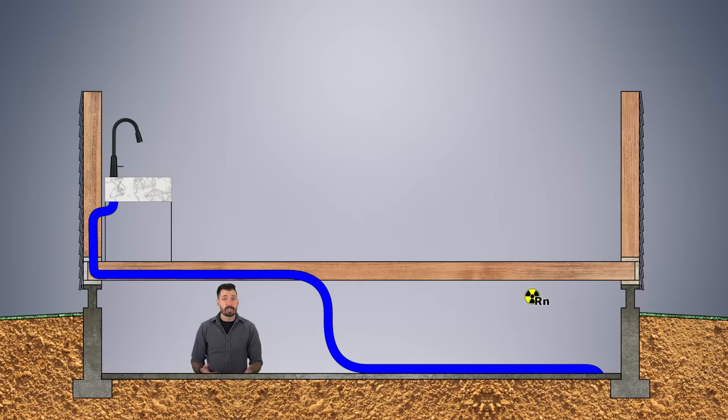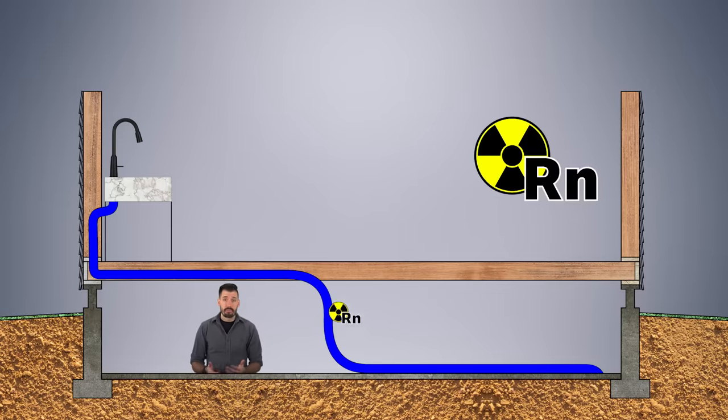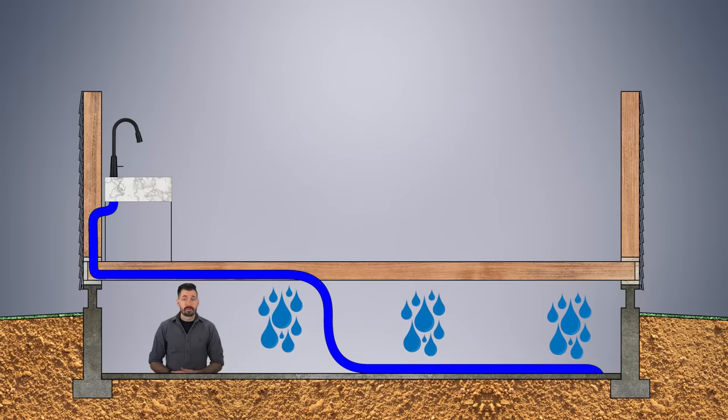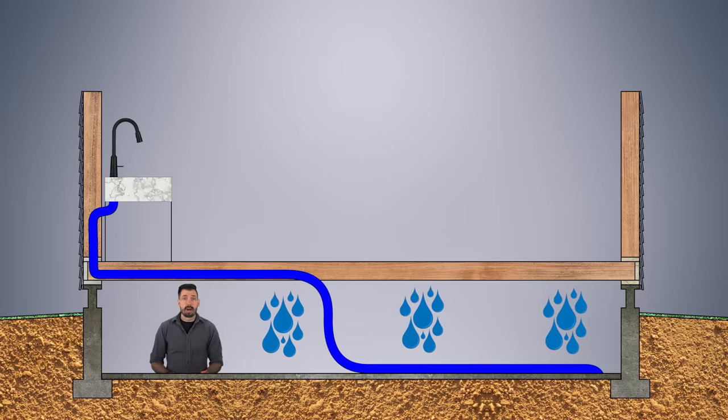First, reducing the crawl space ventilation can result in an increase of radon inside the house, that might be above the EPA's action level of four picocuries per liter, which means that you and your family may be at risk at developing lung cancer from radon. The second issue can also cause respiratory issues, because the moisture that might be present in the crawl space is no longer being vented to the exterior, which could result in mold growth, which can be harmful to occupants in the home.